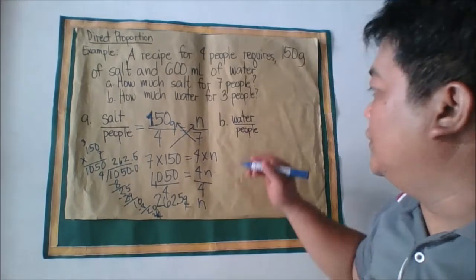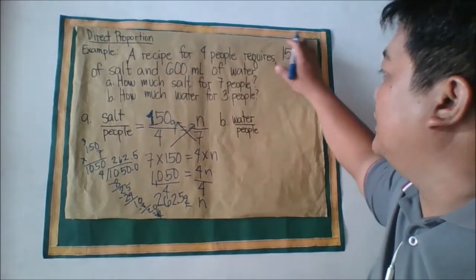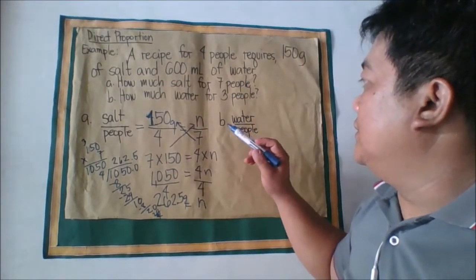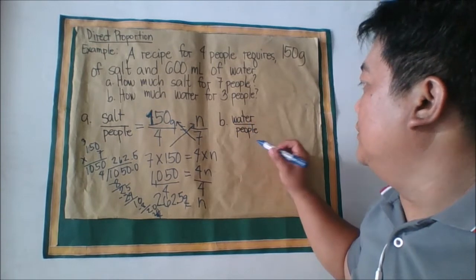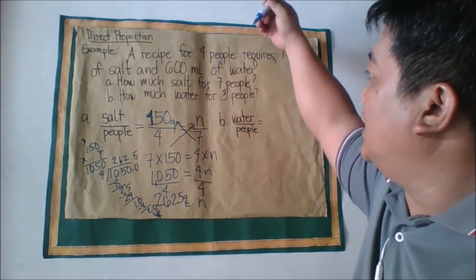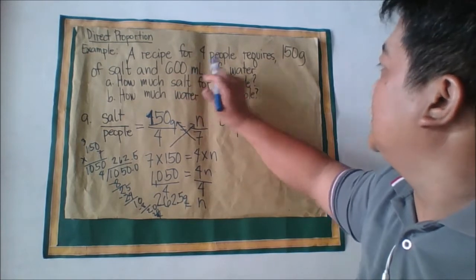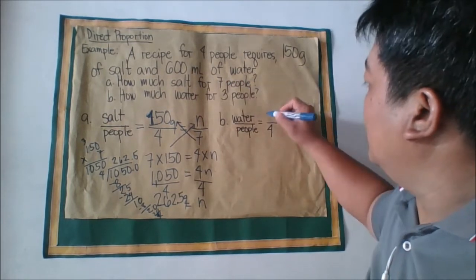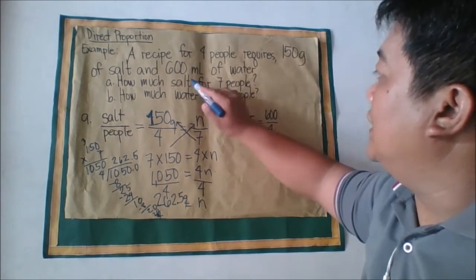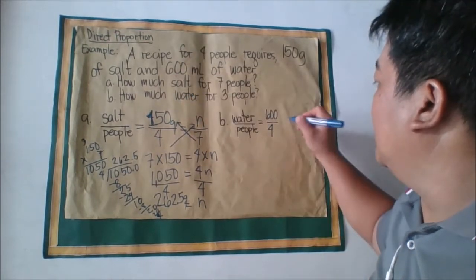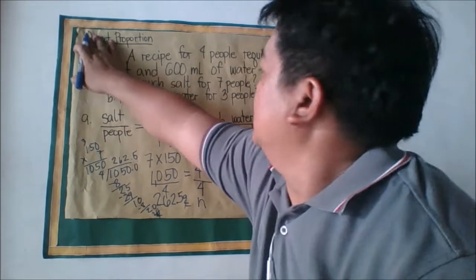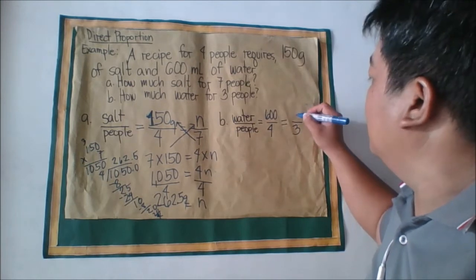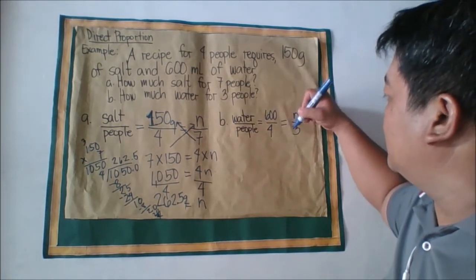Now let's move to the next question: how much water is needed for three people? The ratio is water to people. We base from this: 4 people need 600 mL, so 4 is to 600 mL equals 3 people is to n mL. We use cross multiplication again.